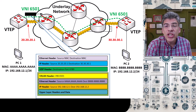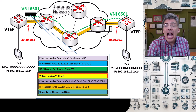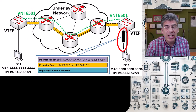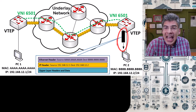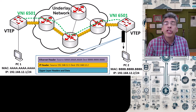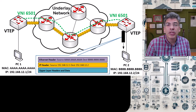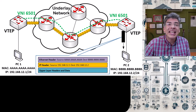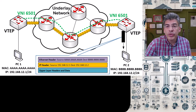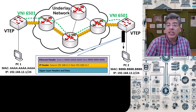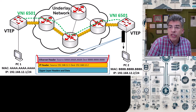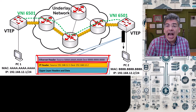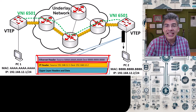Once that packet reaches the destination VTEP, the outer IP and UDP headers are stripped during decapsulation, and the VXLAN header is also read in order to determine to which VNI that frame belongs. Once that's determined, the frame is placed in the appropriate layer two segment. All we're left with is our conventional Ethernet frame, which contains the original IP packet and the upper layer headers and the data itself.